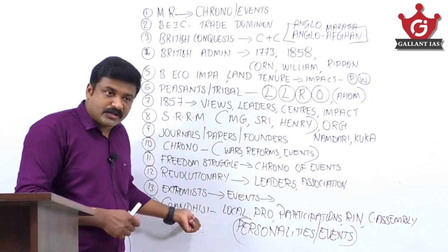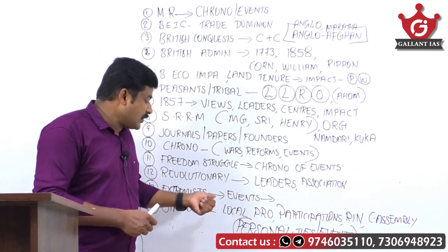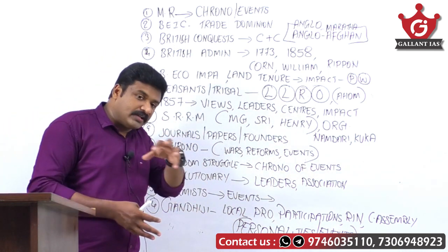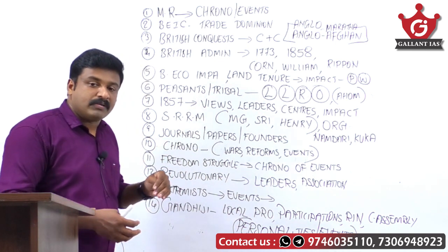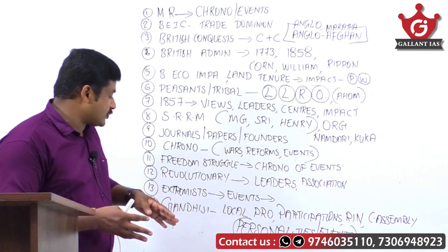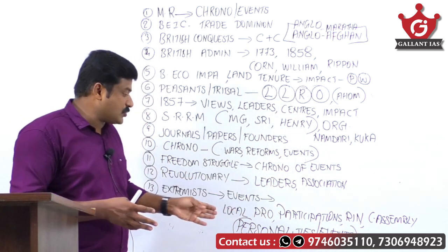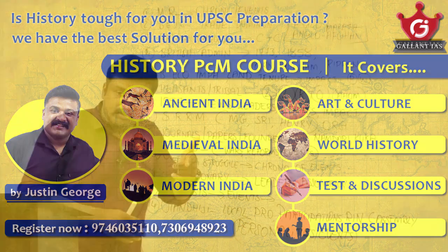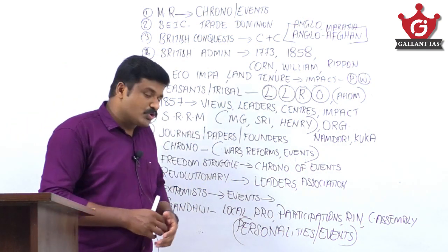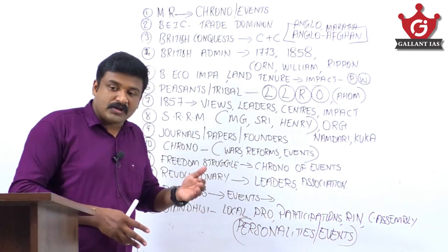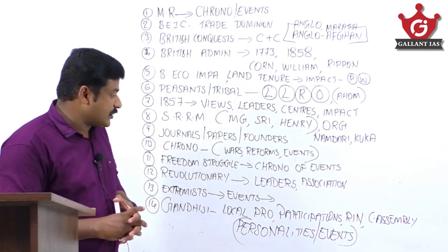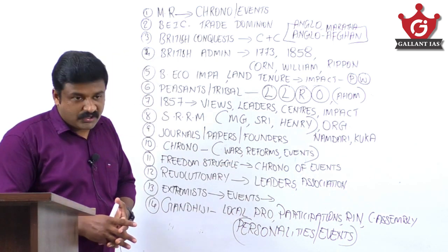For Gandhi, focus on his South African experience and his localized movements in India — the Champaran, Ahmedabad, and Kheda Satyagrahas — including their causes and consequences. Know his participation in various events of the 1920s, 30s, and 40s — for example, Gandhi participated only in the Second Round Table Conference. Cover his Harijan campaigns, views on the Swarajist Party, Non-Cooperation Movement, Civil Disobedience Movement, and Quit India Movement. The RIN Mutiny and the Constituent Assembly and related events are also important.